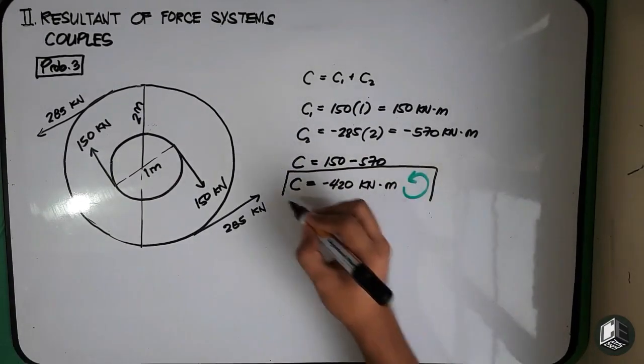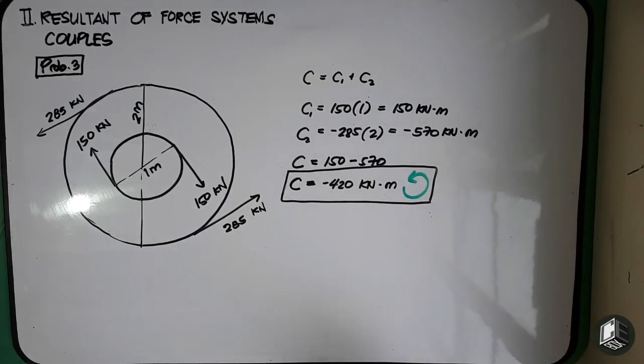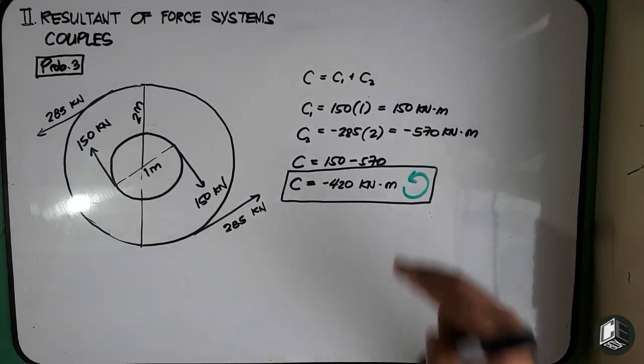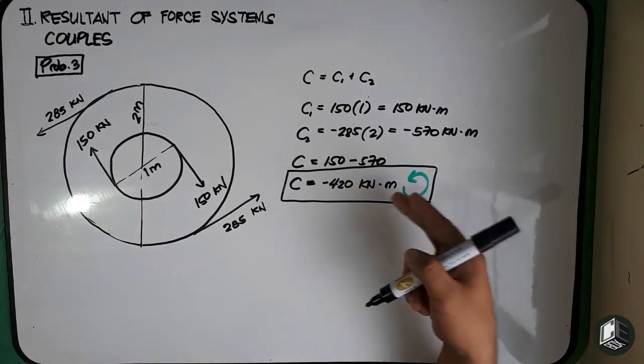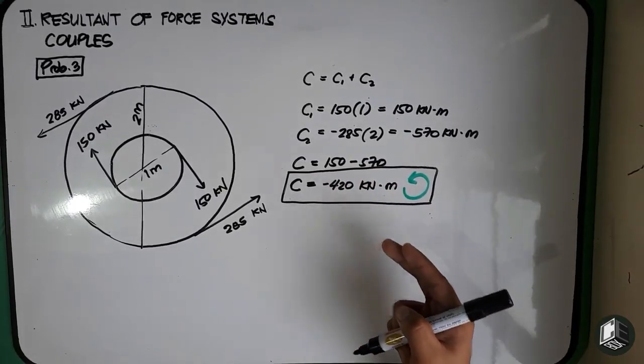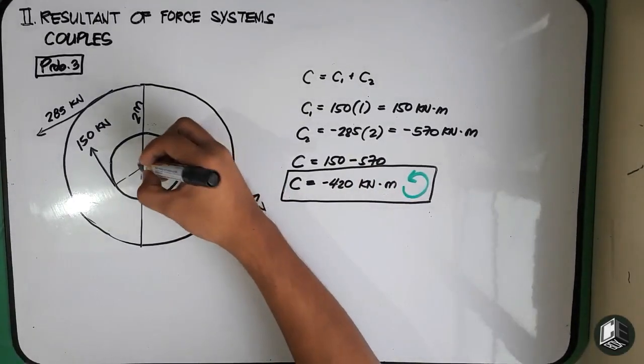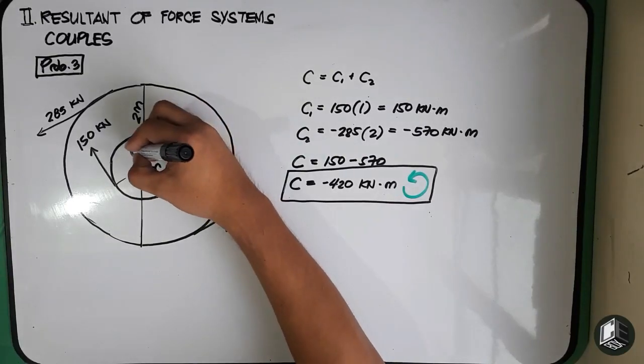So ngayon ang next naman na yung susunod natin is yung force daw na maki-create or yung force na mag-create ng negative 420 kN na couple at 1.5 meter from the center.